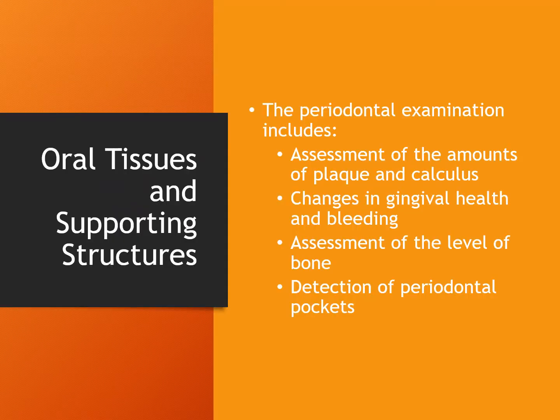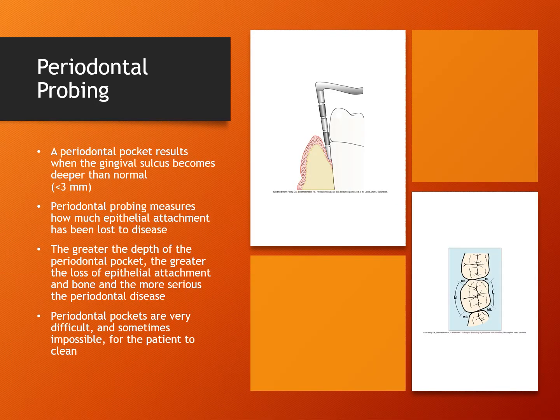Another part of the periodontal examination includes assessing the amount of plaque and calculus present, any changes in the gums, and any bleeding. The periodontist also will assess how much bone loss there is and will look for periodontal pockets. The periodontist uses a periodontal probe to check for periodontal pockets. A periodontal pocket becomes evident when the gingival sulcus — the natural space between the surface of the tooth and the gum tissue — becomes deeper than normal. The periodontal probe measures how much epithelial attachment has been lost. The greater the depth of the pocket, the greater the loss of epithelial attachment and bone.